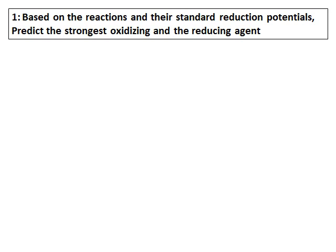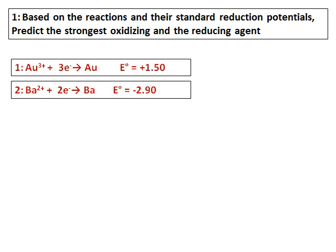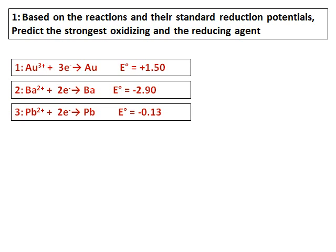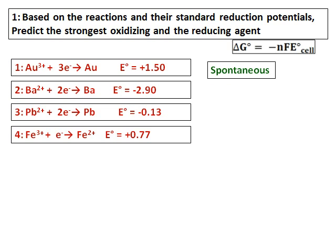Now let's do some questions. Based on the standard reduction potential, predict the strongest oxidizing and reducing agents. The reactions given are: Au³⁺ → Au, Ba²⁺ → Ba, Pb²⁺ → Pb, and Fe³⁺ → Fe²⁺. For a reaction to be spontaneous, ΔG⁰ = −nFE⁰cell, so since ΔG must be negative, E must be positive.